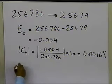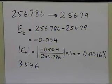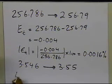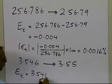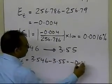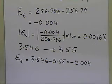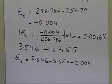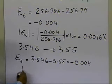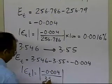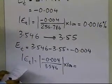If I take another number — let's suppose 3.546 — since it has more than two decimal places, it is going to be approximately represented as 3.55. The true error will be 3.546 minus 3.55, which is minus 0.004. Coincidentally, this has the same true error as the previous case for 256.786. The magnitude of the true error will always be less than 0.01. But the relative true error here is minus 0.004 divided by 3.546 times 100, which turns out to be 0.11%.